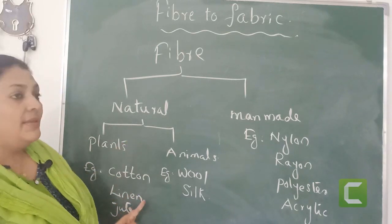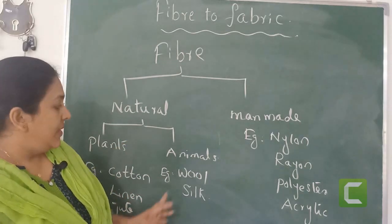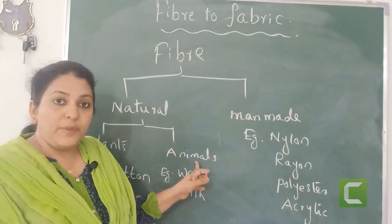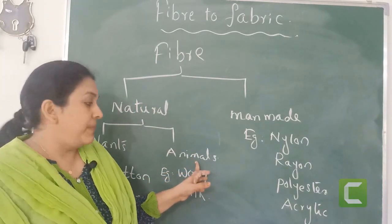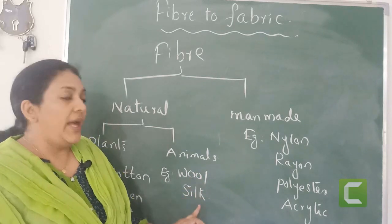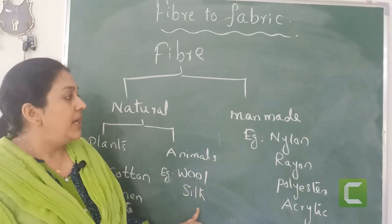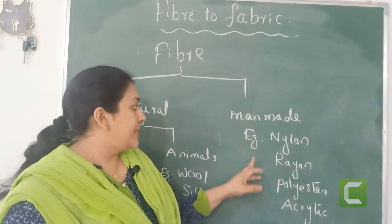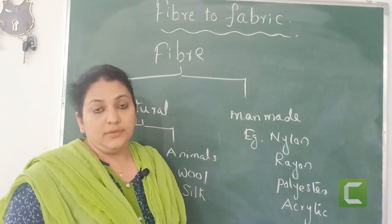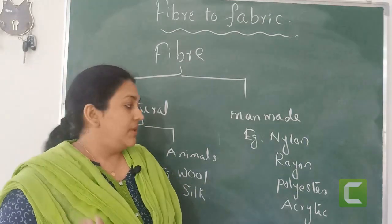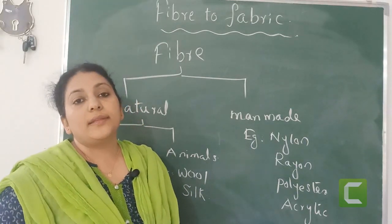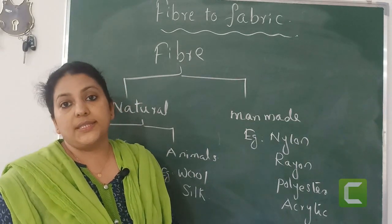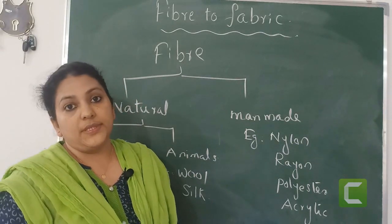You learned this in lower classes. Another type of natural fiber is fibers which are originated from animals, for example wool and silk. Now man-made or artificial fibers — examples are nylon, rayon, polyester, acrylic. These are the examples of artificial or synthetic type of fibers.